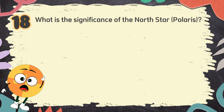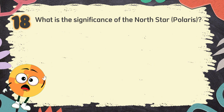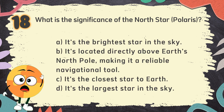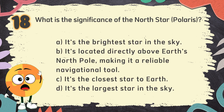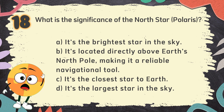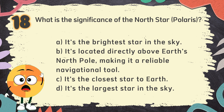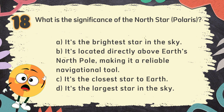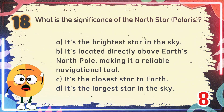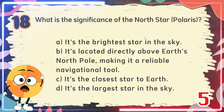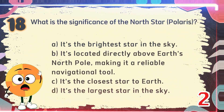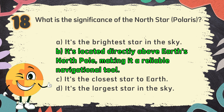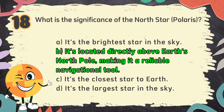Number 18. What is the significance of the North Star, Polaris? The choices are: A. It's the brightest star in the sky. B. It's located directly above Earth's North Pole, making it a reliable navigational tool. C. It's the closest star to Earth. D. It's the largest star in the sky. The correct answer is B: it's located directly above Earth's North Pole, making it a reliable navigational tool.